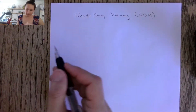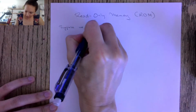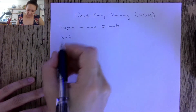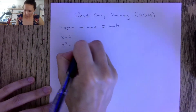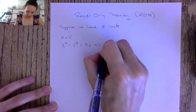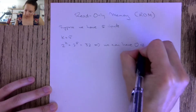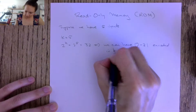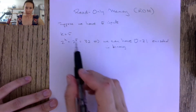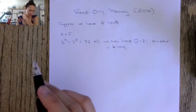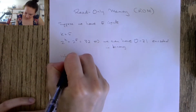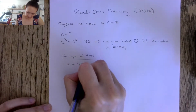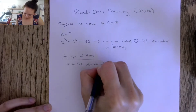The way this works: suppose we have five inputs to our circuit, so K equals five. Then two to the K is two to the fifth, which is thirty-two. This implies that we can have zero to thirty-one encoded in binary — that's the range of decimal numbers we can encode given five inputs. So the first layer of the ROM is going to be a five-to-thirty-two bit decoder.